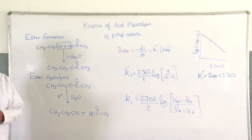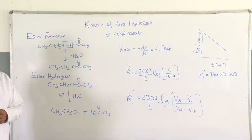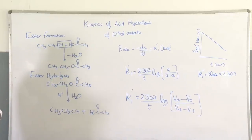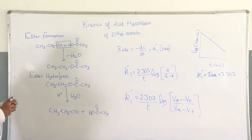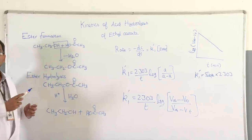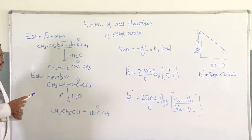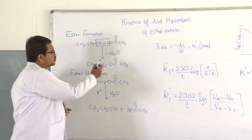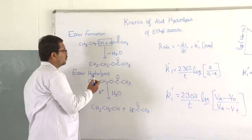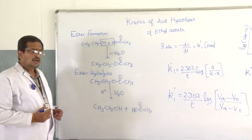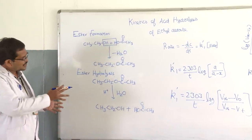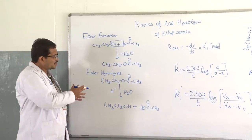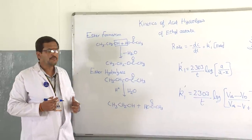Ethyl acetate is an ester. An ester is formed by a reaction between an alcohol and a carboxylic acid — it's a condensation reaction with the removal of a water molecule. The reverse of this ester formation reaction is what we are going to see in today's experiment, which also happens in biological systems with the help of enzymes.